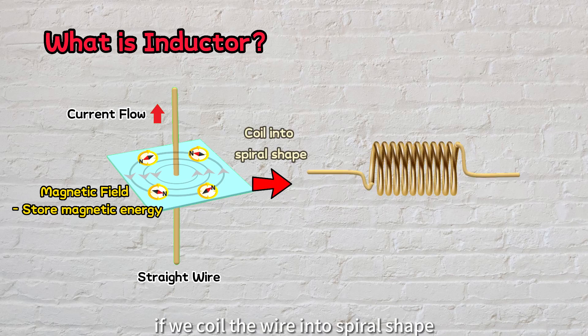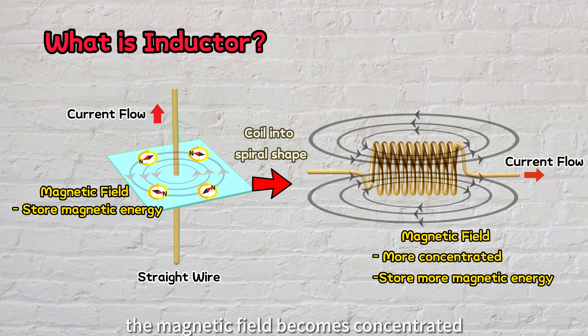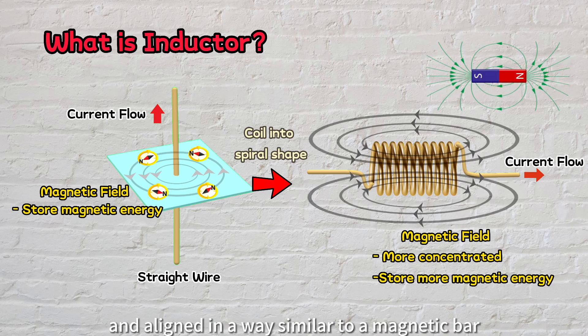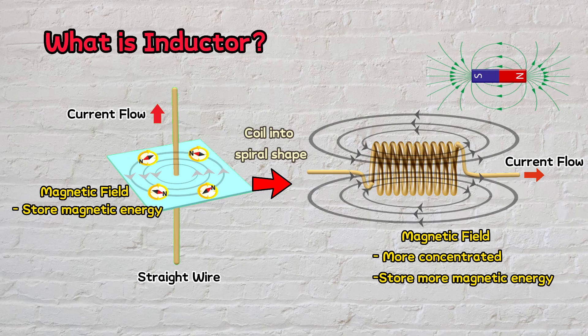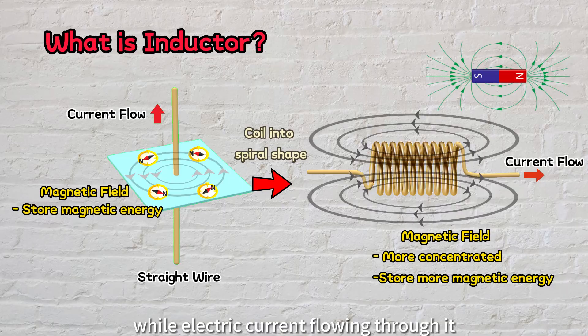But here's the twist: if we coil the wire into a spiral shape, the magnetic field becomes concentrated and aligned in a way similar to a magnetic bar. That's when our ordinary wire becomes an inductor. This inductor can now store more magnetic energy in its concentrated magnetic field while electric current flows through it.